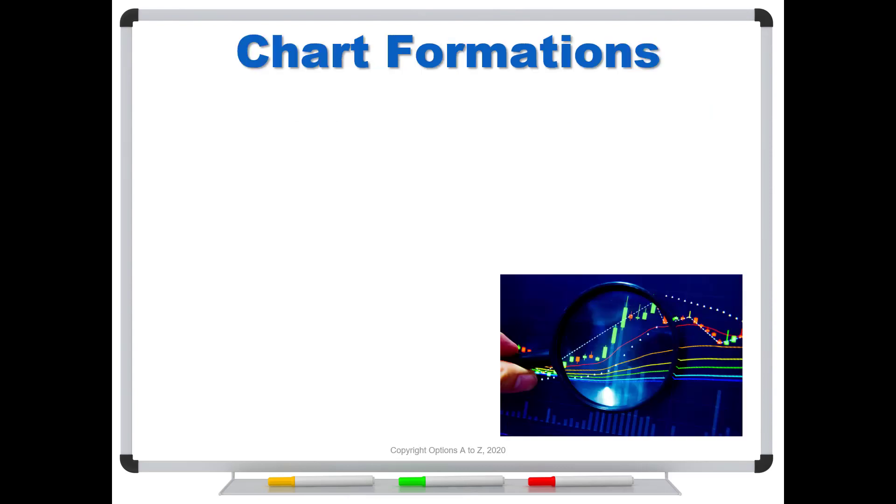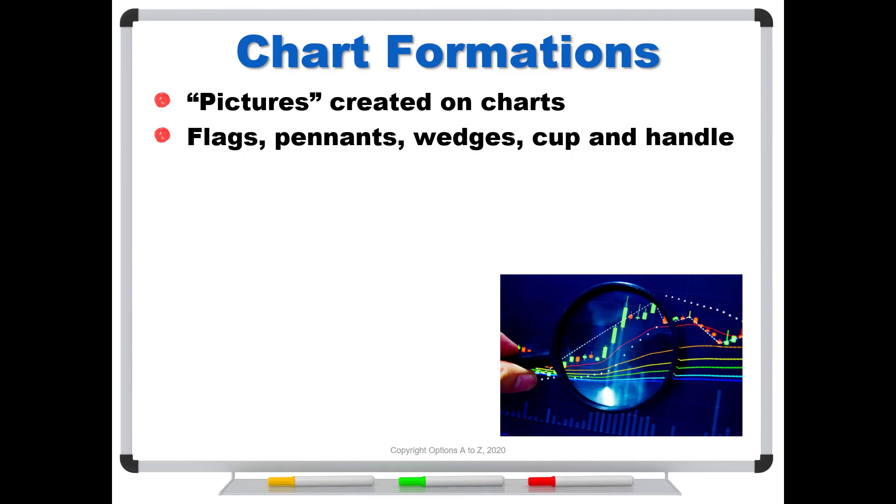Head and shoulder patterns are one of many chart formations. And these are just pictures that are actually created on your charts. Most of you know that there's overlays such as Bollinger Bands or moving averages. Those are types of technical indicators that sit on your chart. Then we also have the lower studies, like MACD and RSI. But the chart formations fall into their own category. They're simply pictures that are created right on your charts. So you'll hear things like flags, pennants, wedges, cup and handle, double tops, double bottoms. There's all kinds of chart formations. And one of the more popular is what's called a head and shoulders pattern.